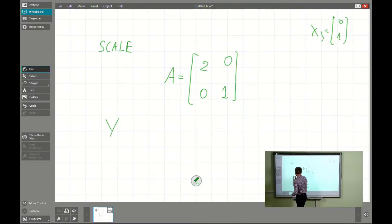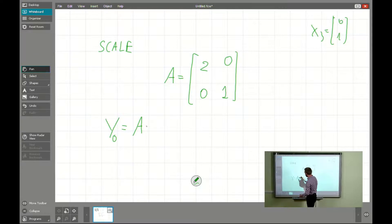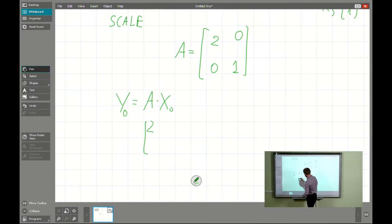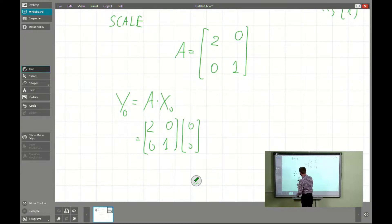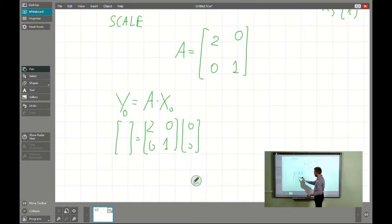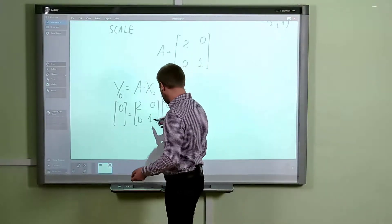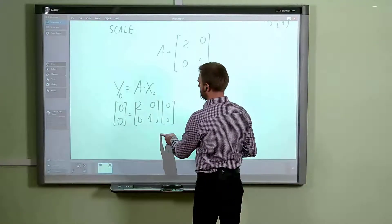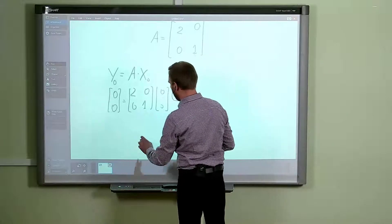Let's apply the transformation. The first component y0 is the image of x0 via the matrix product x0 times A. With the matrix [2,0; 0,1] and x0 = (0,0), we compute: 0×2 + 0×0 = 0, and 0×0 + 0×1 = 0. So y0 = (0,0) — exactly the same as x0.